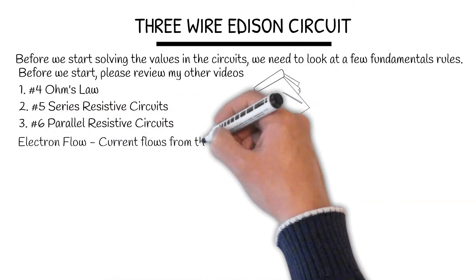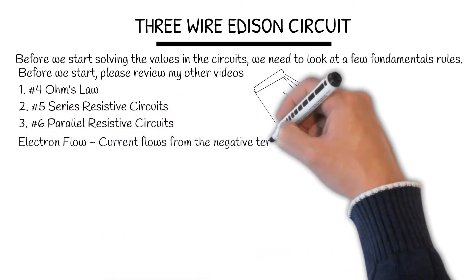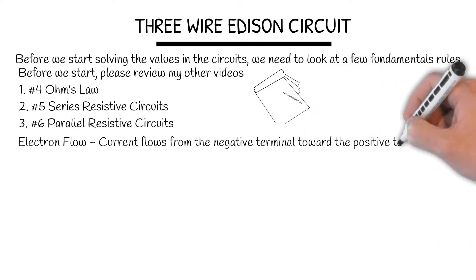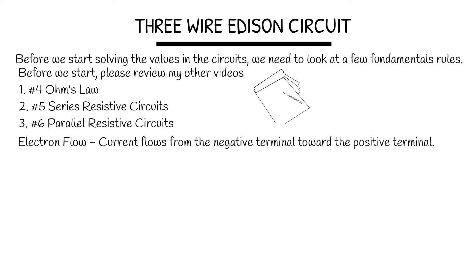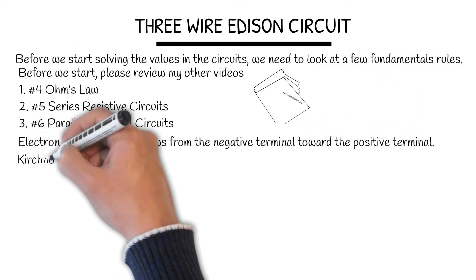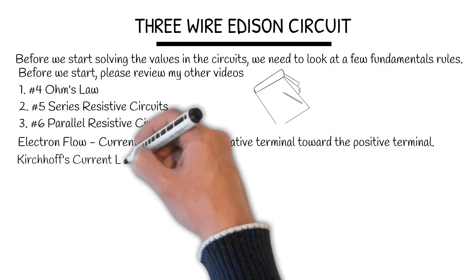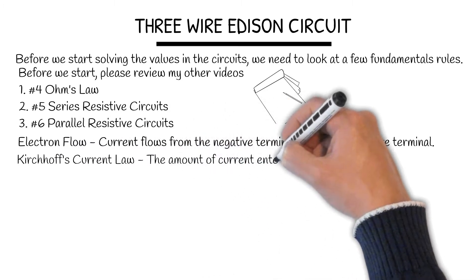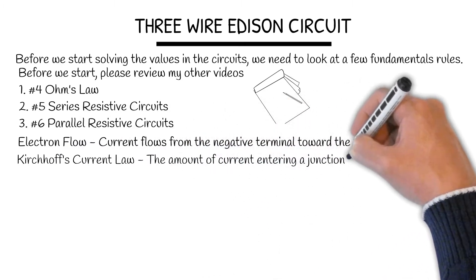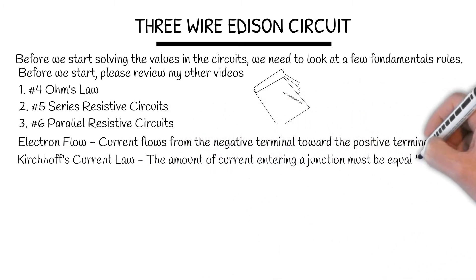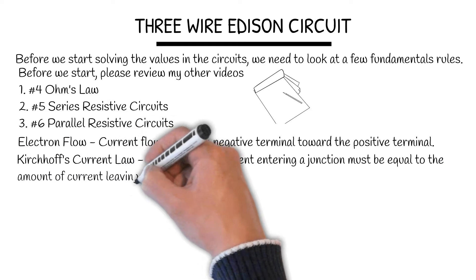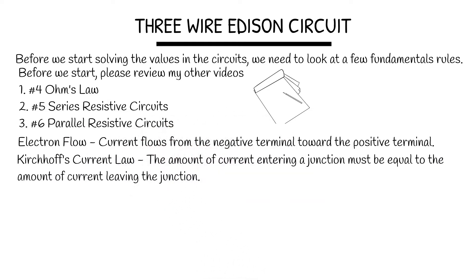Electron Flow: Current flows from the negative terminal towards the positive terminal. Kirchhoff's Current Law: The amount of current entering a junction must be equal to the amount of current leaving the junction.